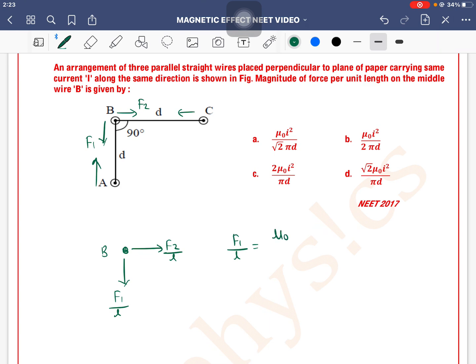This will come mu naught I1 I2 divided by 2 pi D. This means I squared divided by 2 pi D. Even F2 by L value is this.